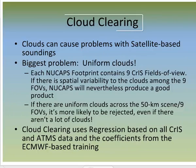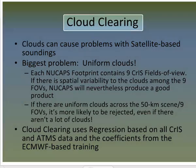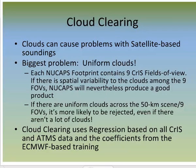Cloud clearing, produced by a regression that uses all of the data, is an important part of the NuCAPS algorithm. From the algorithm perspective, uniform clouds are the biggest problem. Each NuCAPS footprint contains 9 CrIS fields of view. If there is spatial variability to the clouds among those 9 fields of view, NuCAPS will nevertheless produce a good product. If there are uniform clouds across that 50 km scene, it's more likely to be rejected, even if there aren't a lot of clouds.